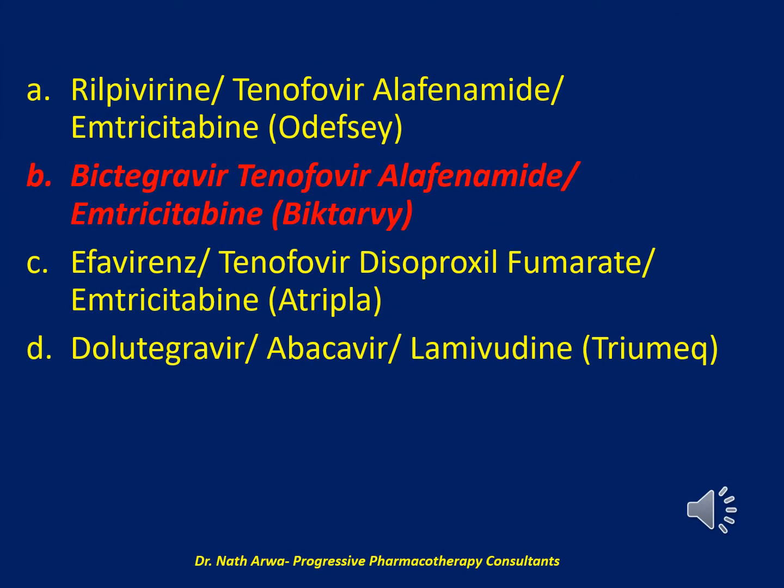The correct answer is B. Bictegravir, tenofovir alafenamide, and emtricitabine, marketed as Biktarvy. Answer D is a single-tablet regimen recommended as a first-line treatment option in the DHHS HIV treatment guidelines. The HLA-B*5701 test is negative, making abacavir a potential therapeutic option. However, this patient also has hepatitis B virus infection, for which lamivudine is suboptimal. A tenofovir-containing HIV treatment regimen is preferred.